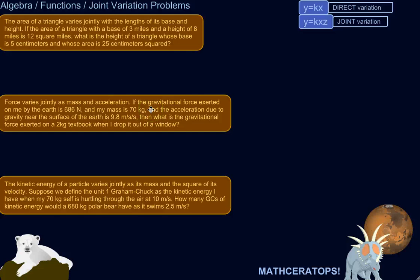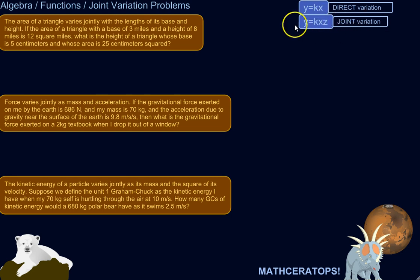We're going to try some joint variation problems, and that is very related to direct variation. If we say that y varies directly as x, then the relationship can be described like this: y is equal to x times some constant k. If y varies jointly as x and z — there's two variables — then we would say y is equal to x times z times some constant. The only difference between direct variation and joint variation is that there's another variable added in the mix.